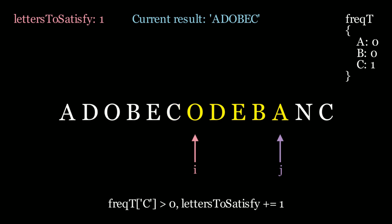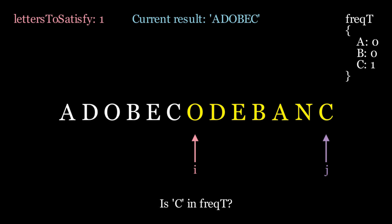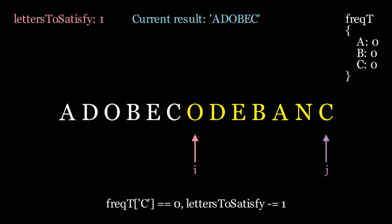I move the i pointer along. We're no longer satisfied — this substring does not contain all the characters from t. So I start moving j along again. Is n in the frequency table? No, so I move along to c. Is c in the frequency table? It is, so we decrement the value at c back to 0. Since we hit 0 again, we satisfy the letter c, and we update letters to satisfy from 1 to 0.